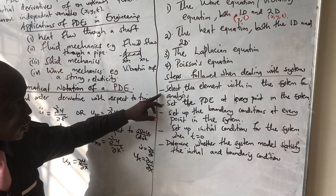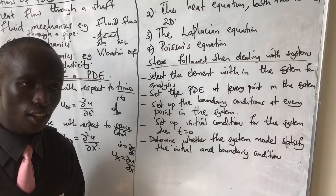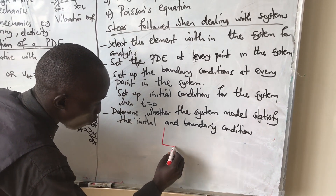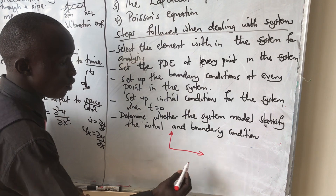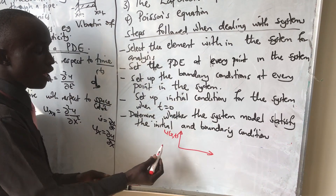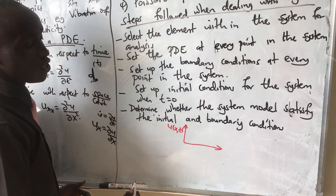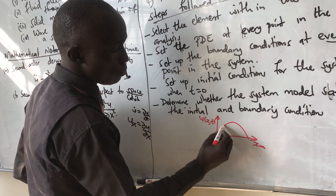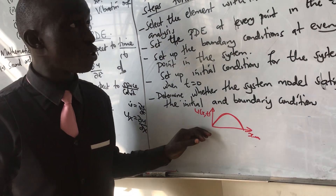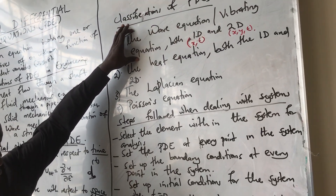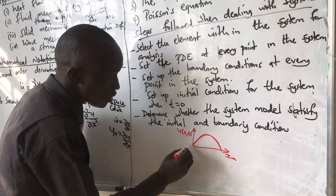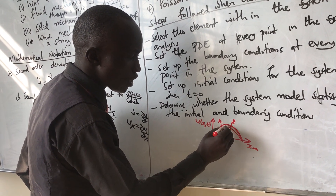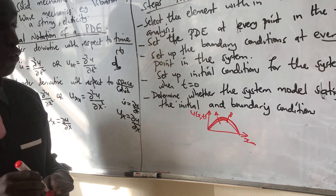The first step is to select the element within the system for analysis. For example, if we're considering a wave equation — a vibration of a string in one dimension, in terms of x and t — we take the x-axis, assume the string is vibrating, and take two points on the string: point A and point B. That element between A and B is what we consider for analysis.